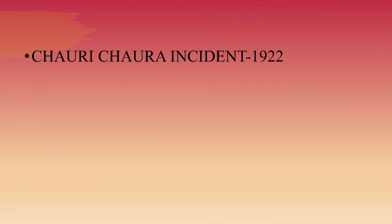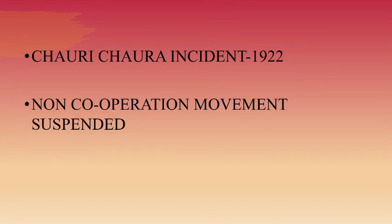In February 1922, the police fired upon a procession of Non-Cooperation activists at Chauri Chaura in Gorakhpur. The activists turned violent and set the police station on fire, killing 22 policemen. This led to more violence, so Gandhi Ji suspended the Non-Cooperation Movement. However, this movement marked the beginning of mass movement in India.